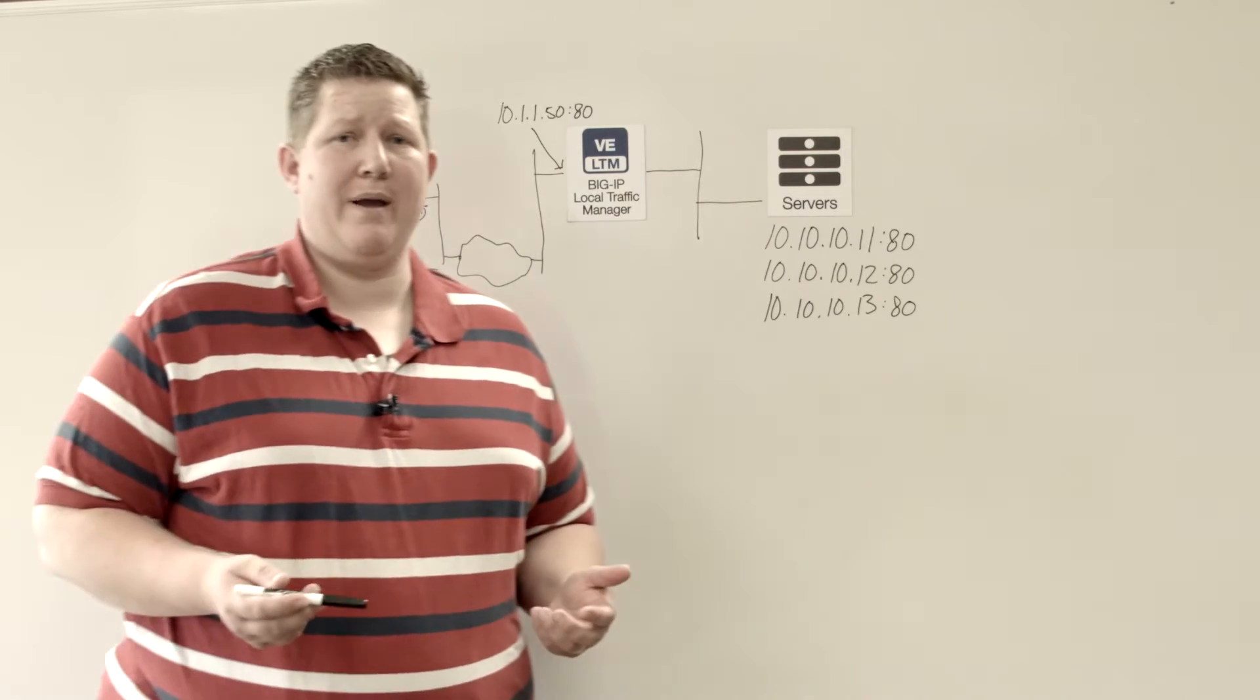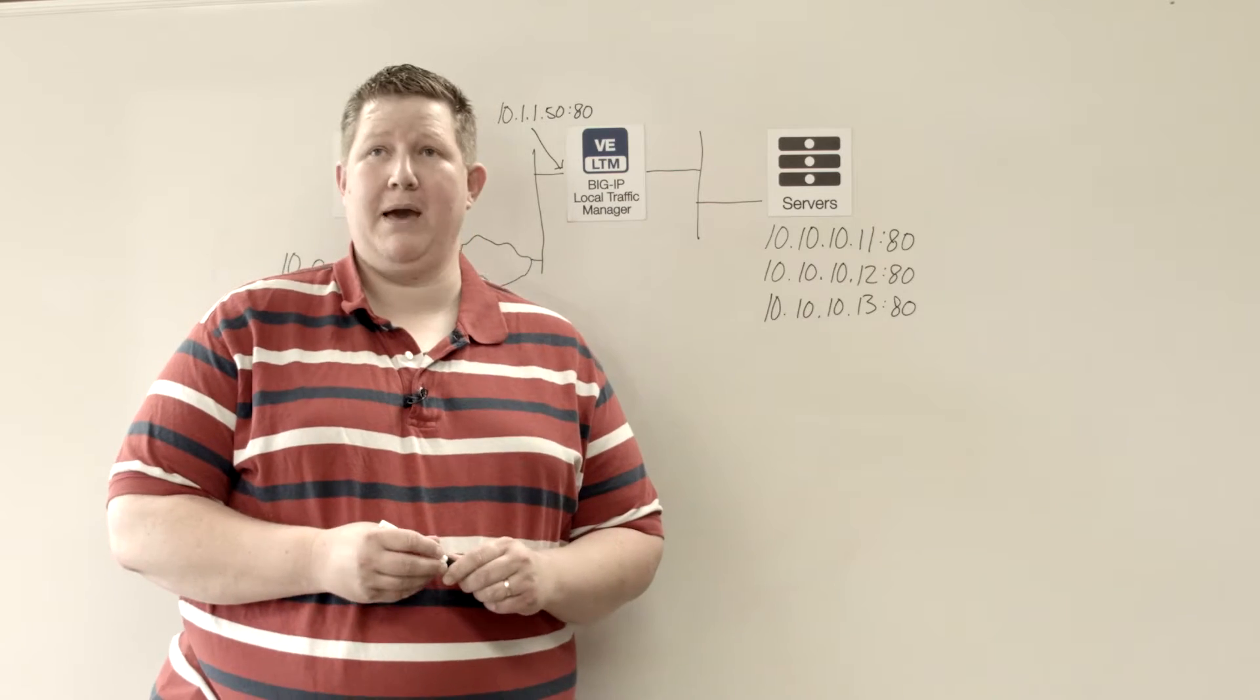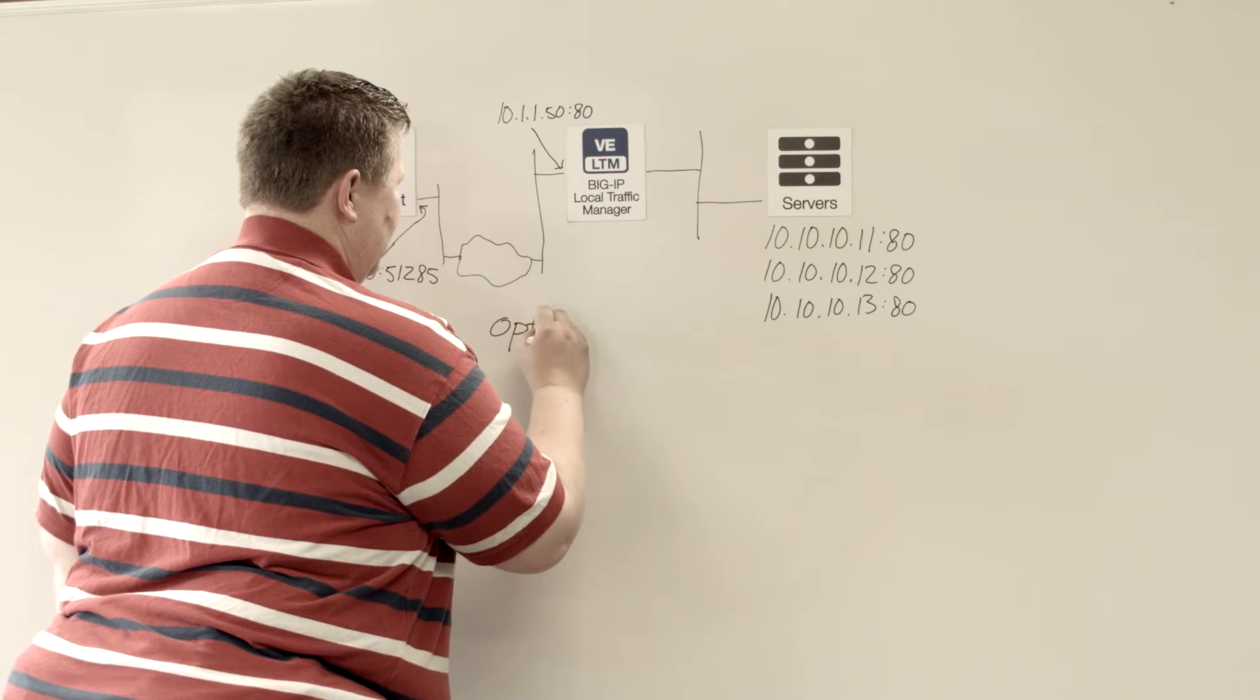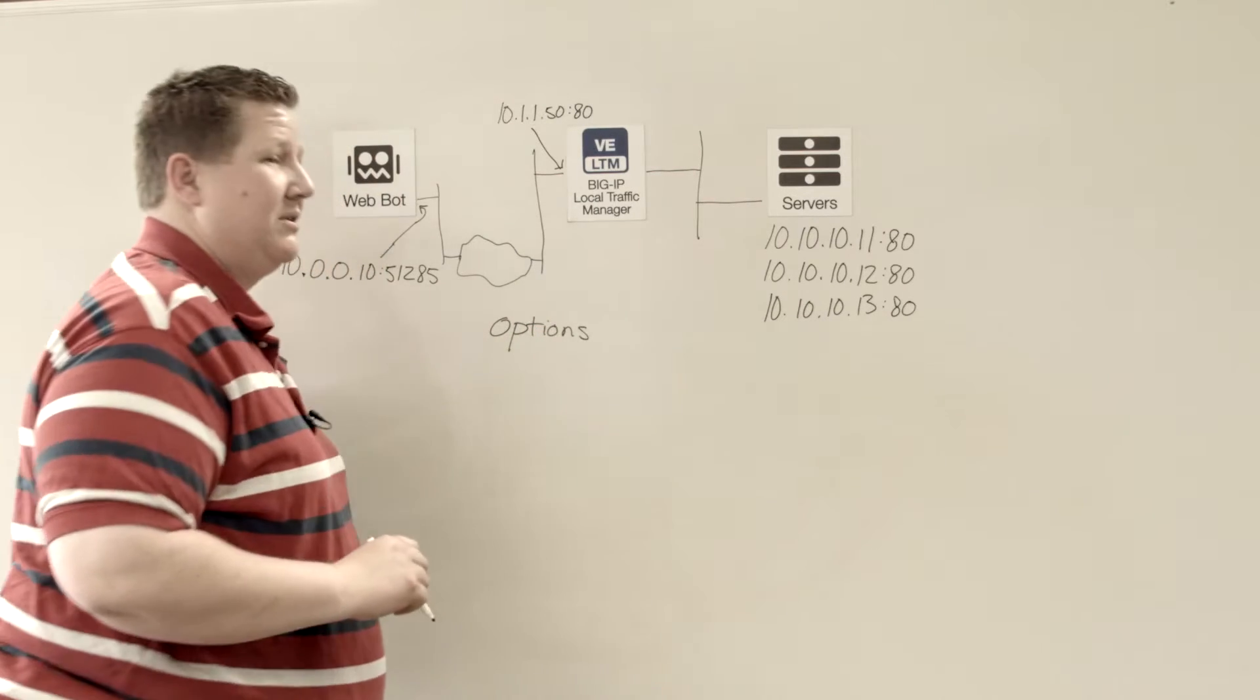The custom query parameters that we have on the iControlREST API are options. And what options allow you to do, take for example the tmsh show sys connections command.